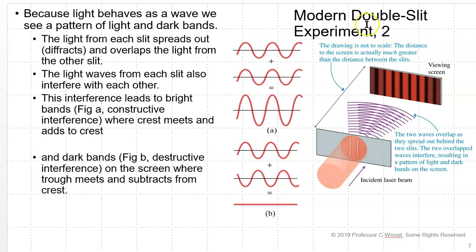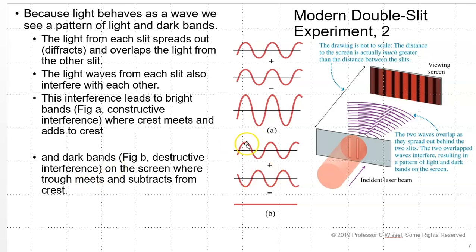The light from each slit will spread out and they will overlap. If the waves end up with crest to crest and trough to trough, you wind up with constructive interference, giving you a bright band. If instead the crest of the light from one slit meets a trough from the other, you end up with destructive interference — they wipe each other out — giving you a dark band.